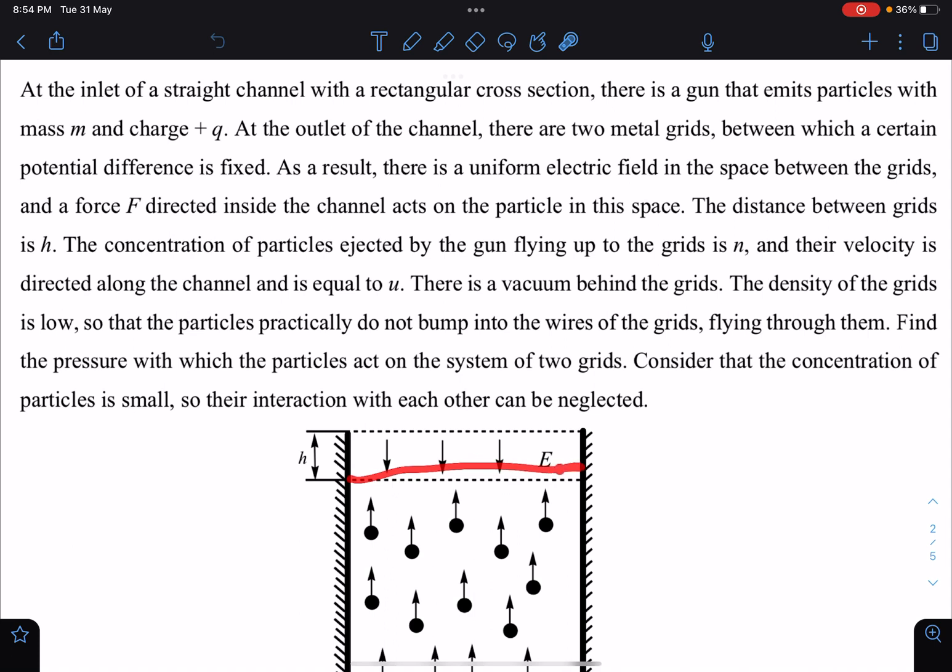There is vacuum behind the grids. The density of the grids is low so that the particles practically do not bump into the wires. Find the pressure with which the particles act on the system of two grids. Consider that the concentration of particles is small so their interaction with each other can be neglected.